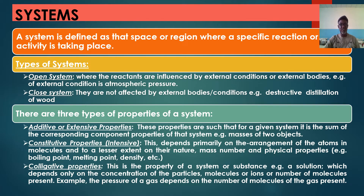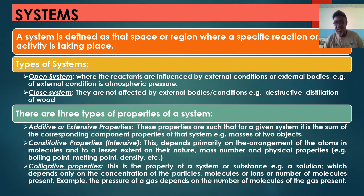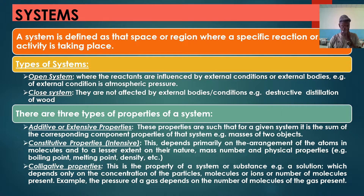When we talk about a system, it is to demarcate a space or region where we're taking a specific reaction. For instance, the class where we are can be our system. If we decide to classify that class as our system, then we're not interested in what is happening around the university — our interest is within that class. This is a chemistry course, so whatever is happening in the chemistry course is our interest; we're not interested in economics, business, or even another science course.